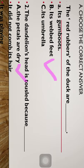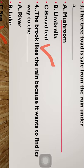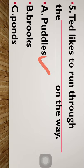The dandelion is also happy when it sees the rain because its head was tousled because its petals are dry. The tree toad is safe from the rain under a broad leaf — the answer is C, broad leaf. The brook likes the rain because it wants to find its way to the sea — answer is C. Ted likes to run through the puddles on the way when he goes to school.